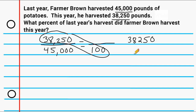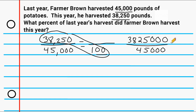Whenever you multiply by 100, you just stick two zeros on the end of your number. So we stick two zeros at the end of 38,250, giving us 3,825,000, and then we divide that product by 45,000. Whenever you are dividing two values ending in zeros, you can cross off matching ending zeros — one pair, two pairs, and three pairs. So dividing 3,825 by 45 will give us our percentage.